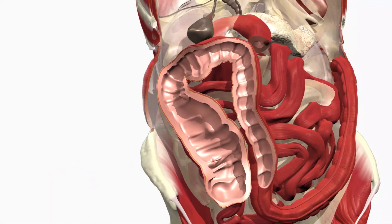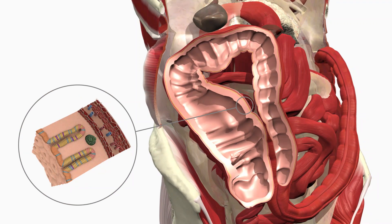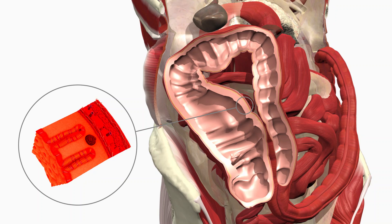The walls or lining of the digestive system are made up of multiple layers. Inflammation in Crohn's disease can occur through the full thickness of the intestine wall and is responsible for the symptoms of Crohn's disease.